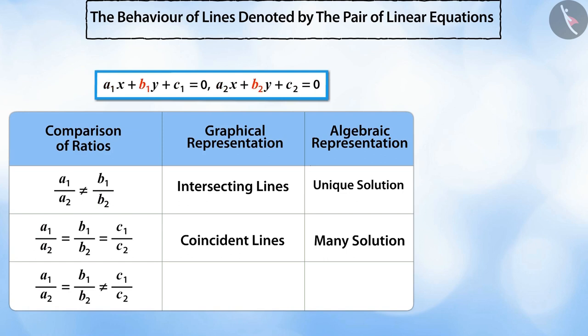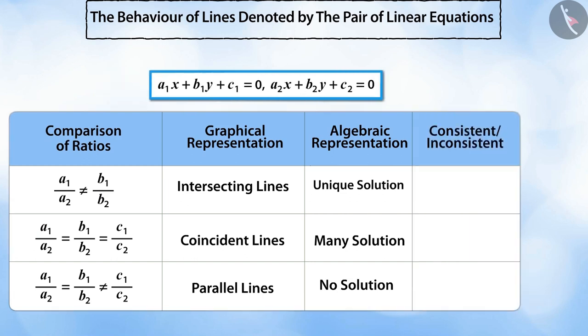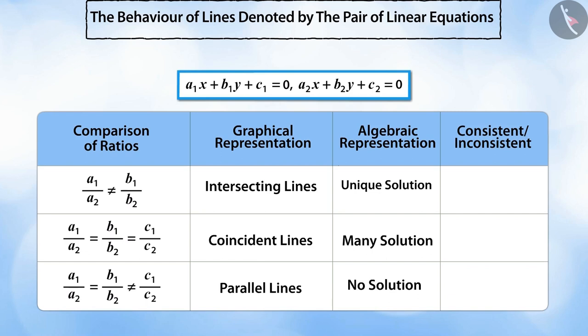And if the ratio of the coefficients of x and the ratio of the coefficients of y are not equal to the ratio of the constant terms, then the lines are parallel lines. In this case, there is no solution for the pair of equations. So, a pair of linear equations that have a common solution is called the consistent pair of equations, and a pair of linear equations that has no solution is called the inconsistent pair of equations.